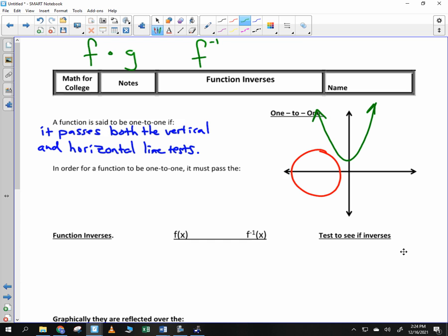Does that one pass the vertical line test? So it's a function. Does it pass the horizontal line test? No. So it's not a one-to-one function.